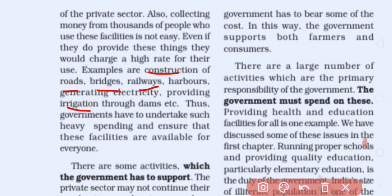These are services where the cost is high, so private individuals cannot undertake them — they cannot afford that much expenditure. Secondly, even if they do spend, it becomes difficult to collect money from the thousands of people who use these services. The government can easily collect by levying taxes on everyone. But for private individuals this is not possible. These are the three reasons why essential services are provided only by the public sector: cost is high, collection is difficult, and if the private sector does provide them, the price would be much higher.